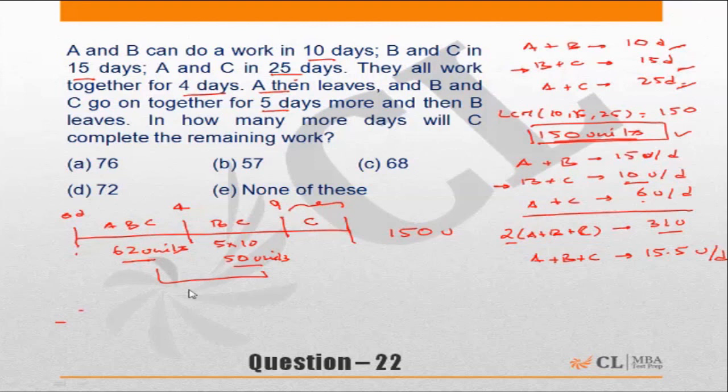In the first nine days, 112 units have gone. So the amount of work that C has to do alone will be 150 minus 112, which is 38 units. So C does 38 units of work alone.